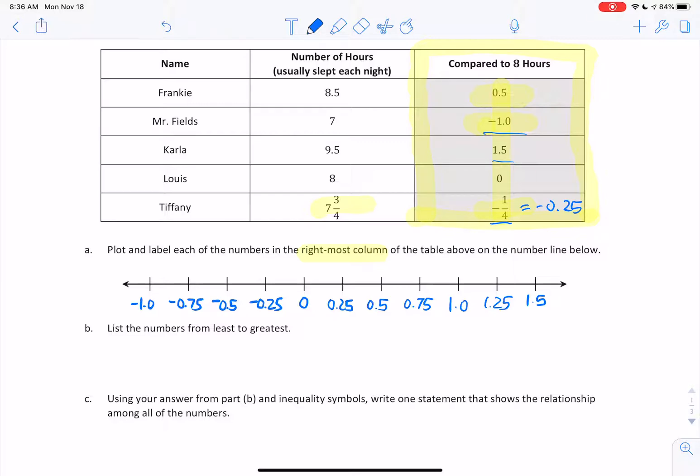Starting from the top, Frankie is 0.5. Mr. Fields is negative 1.0. Carla is 1.5. Louis is 0—meaning he doesn't sleep more than 8 hours or less than 8 hours. He sleeps exactly 8 hours. And then we have Tiffany at negative 0.25.